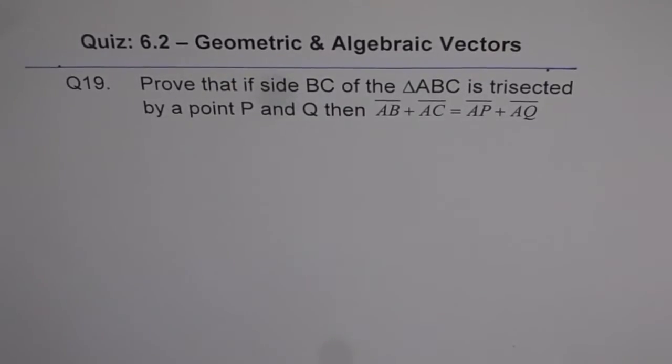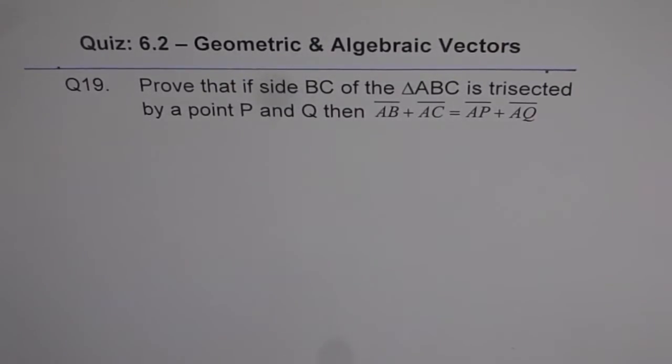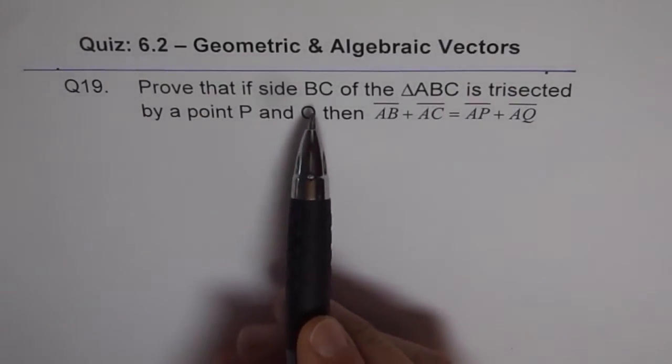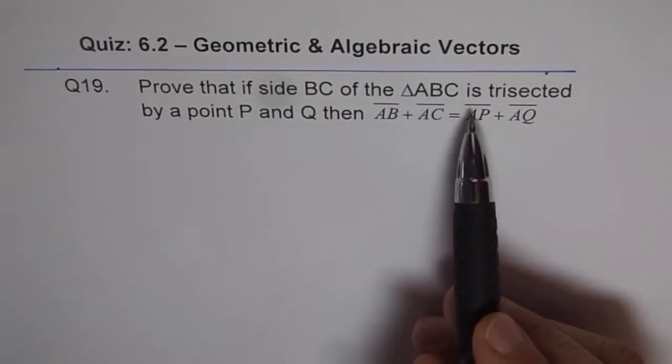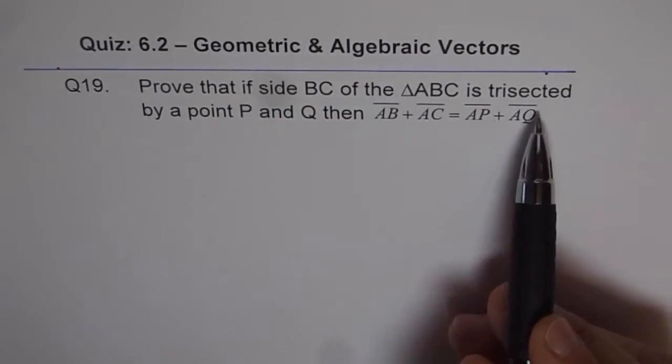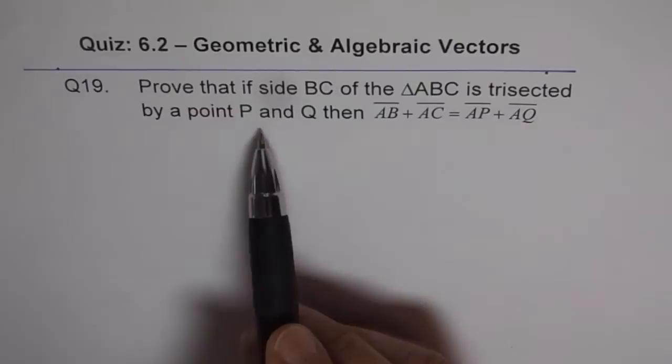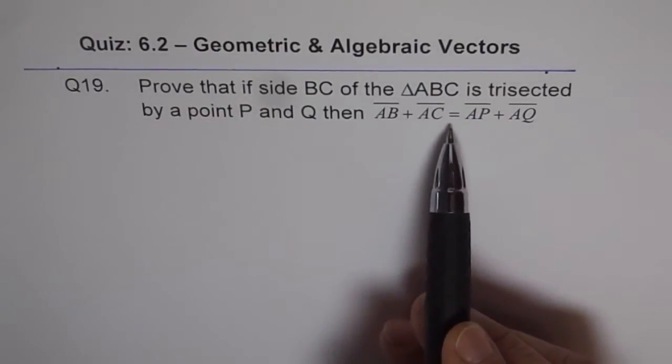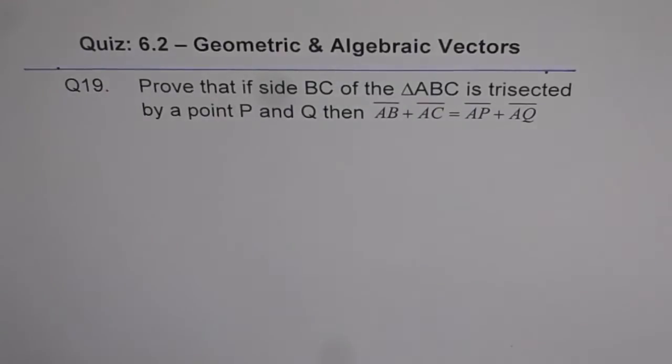Here is the solution to question 19 which was asked in quiz 6.2. The question is: prove that if side BC of a triangle ABC is trisected by points P and Q, then AB + AC = AP + AQ. So let's try to sketch and then solve the question.